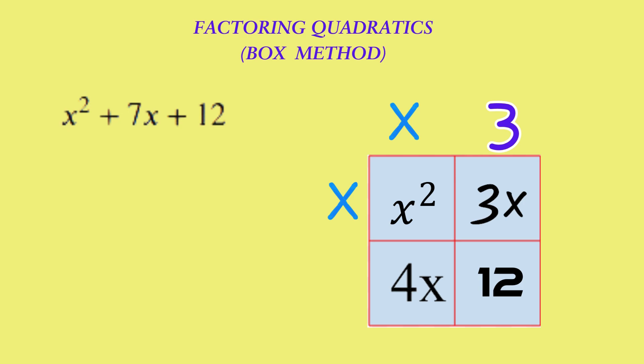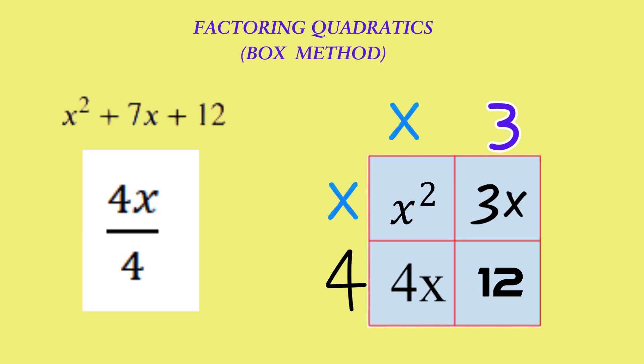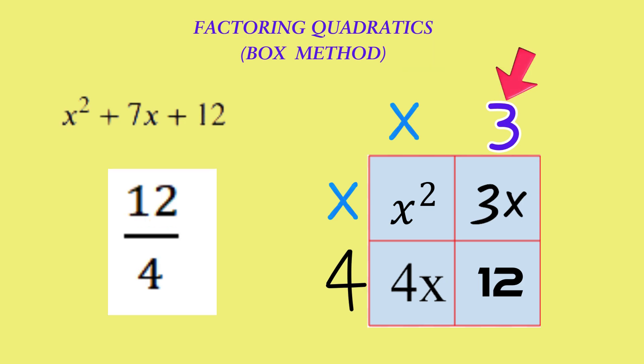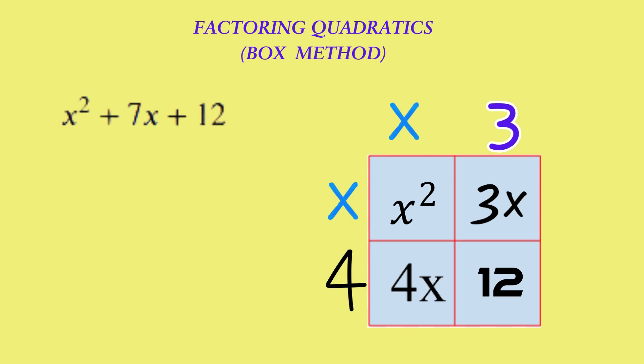Now let's go to the second row, where we have 4x plus 12. Their highest common factor is 4. If we divide 4x by 4, we get x. And if we divide 12 by 4, we get 3. The same numbers we already have at the top — as they should be.